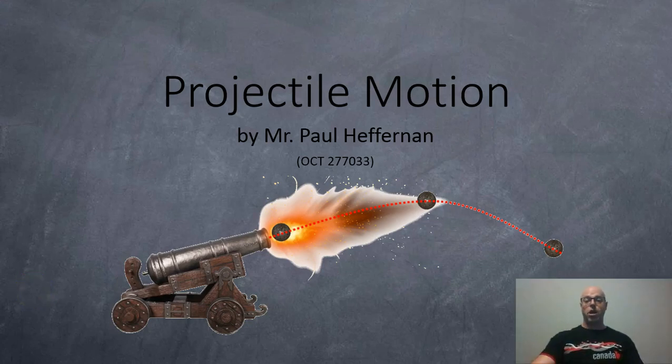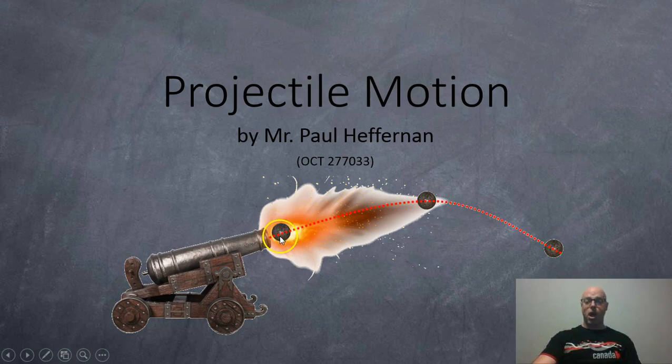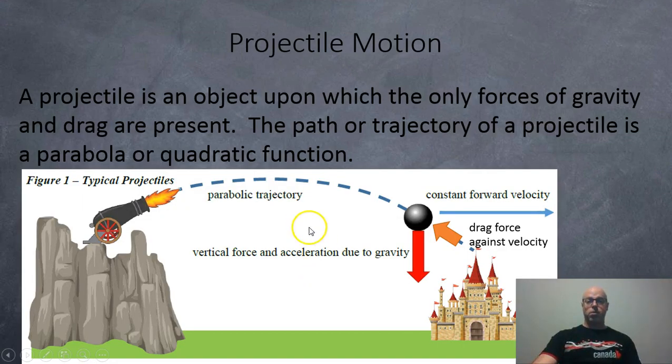Mr. Heffernan here, projectile motion. So here's a projectile, a cannonball, traveling in a nice parabolic path or quadratic function. A projectile is an object upon which only the forces of gravity and drag are present. The path or trajectory of the projectile is a parabola or a quadratic function.